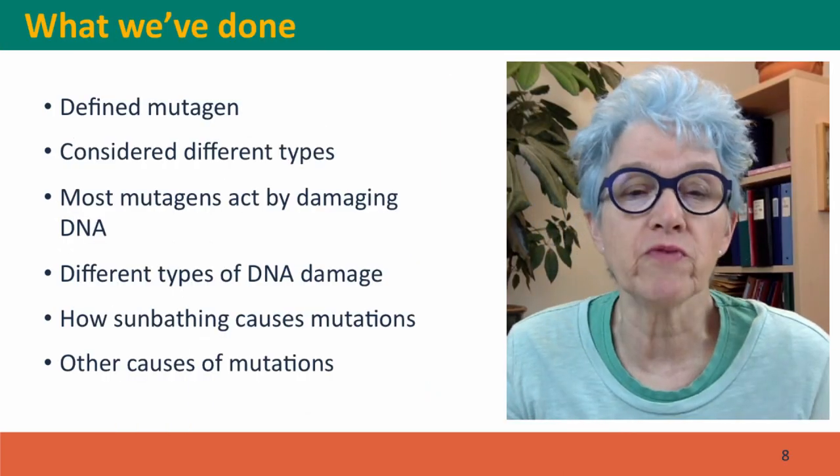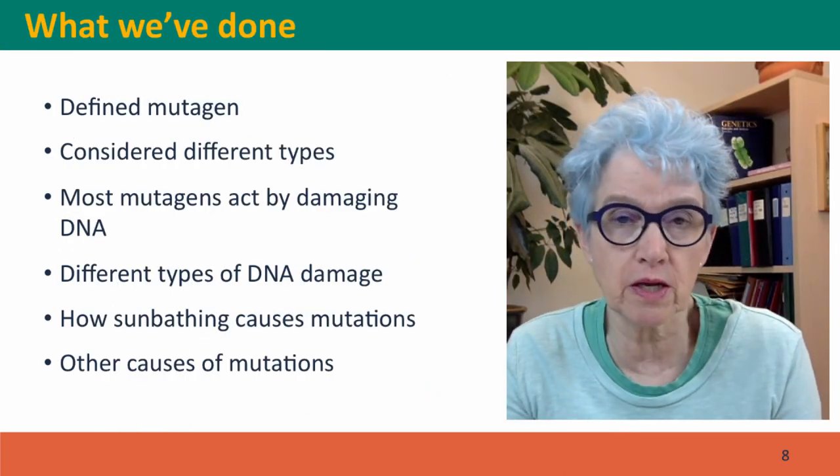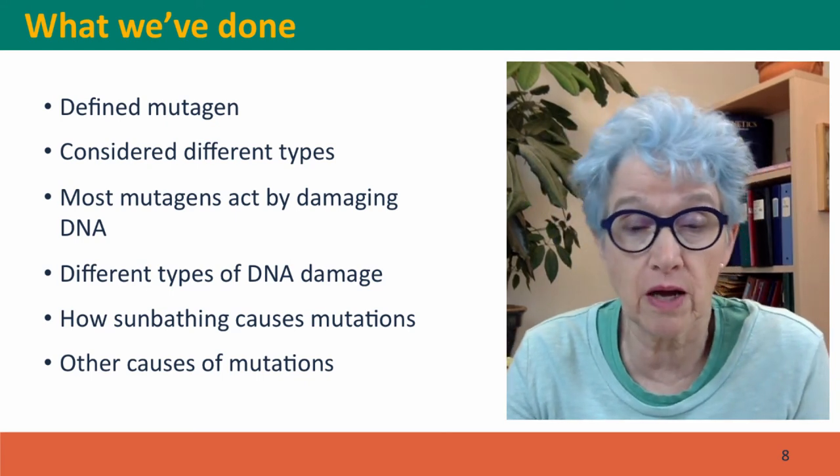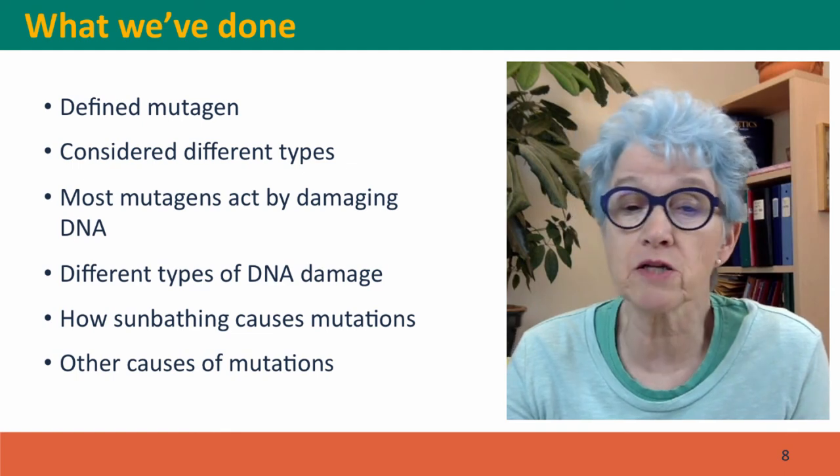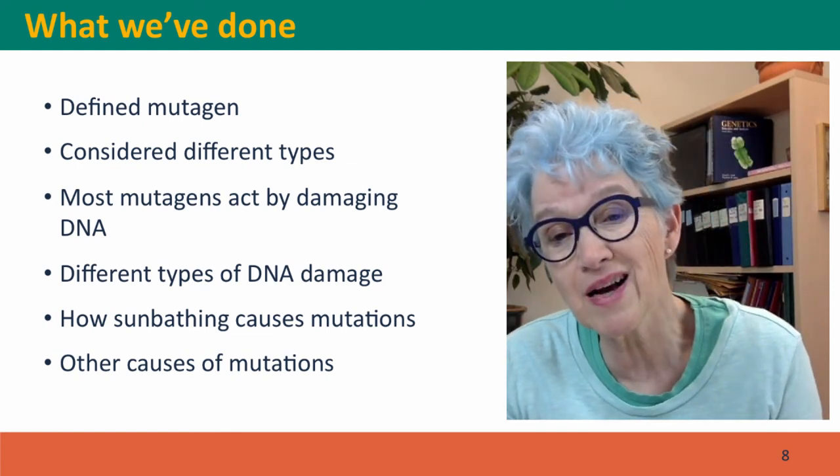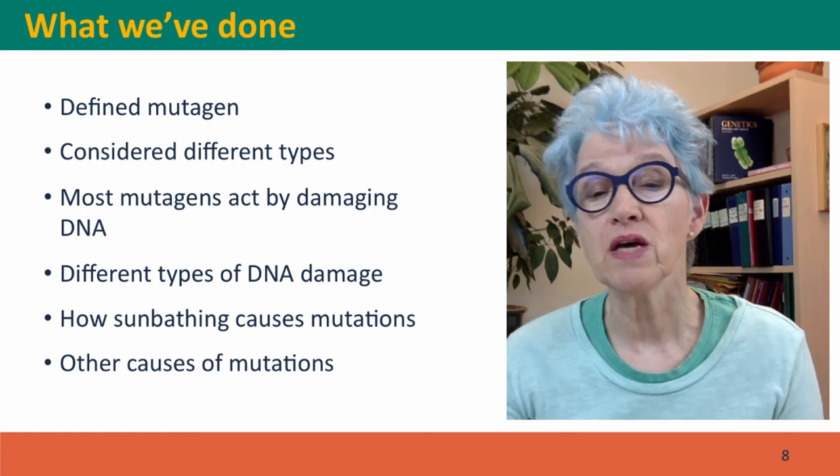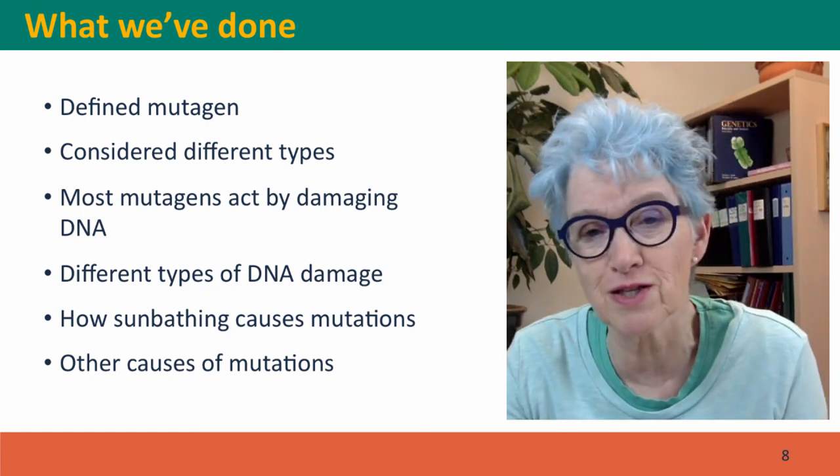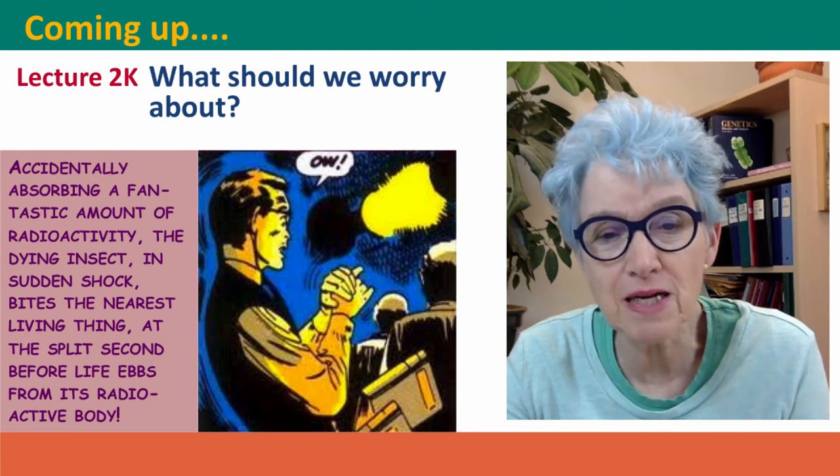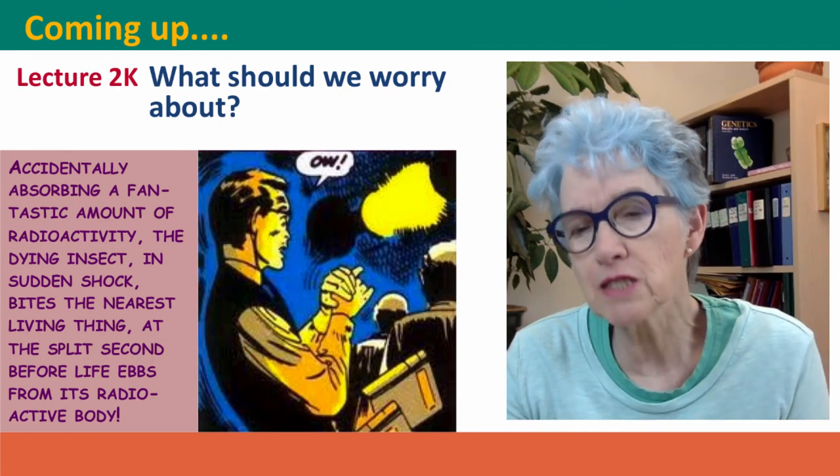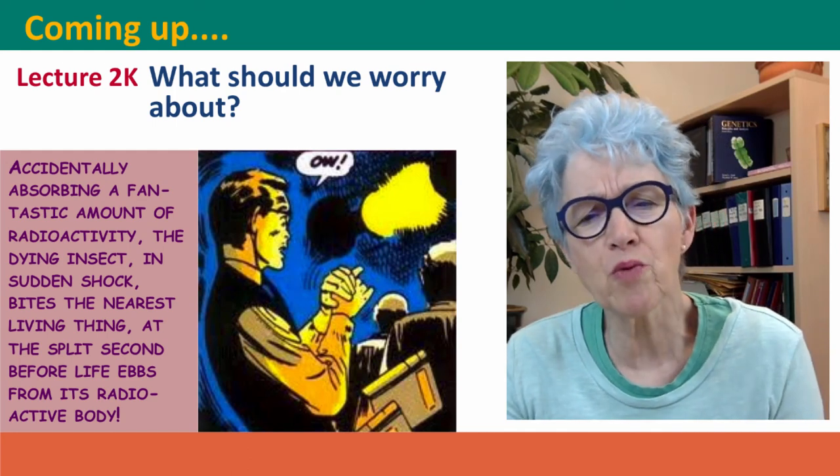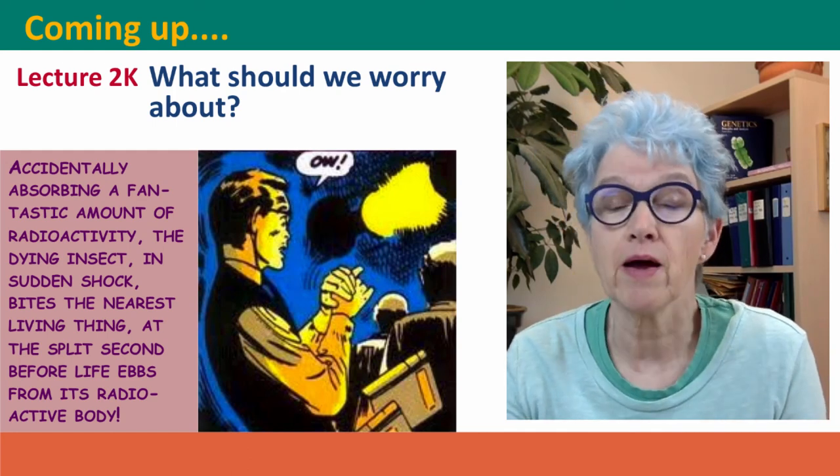Now, what we've done, we've defined mutagen, something that increases the mutation rate above the baseline. We've considered different types of mutagen, that they act by damaging DNA. We've talked about different kinds of DNA damage, and we've done a detailed analysis of how sunbathing causes mutations. Coming up next, we're going to ask, well, given all these things that cause mutations, what should we actually worry about? I hope to see you there.